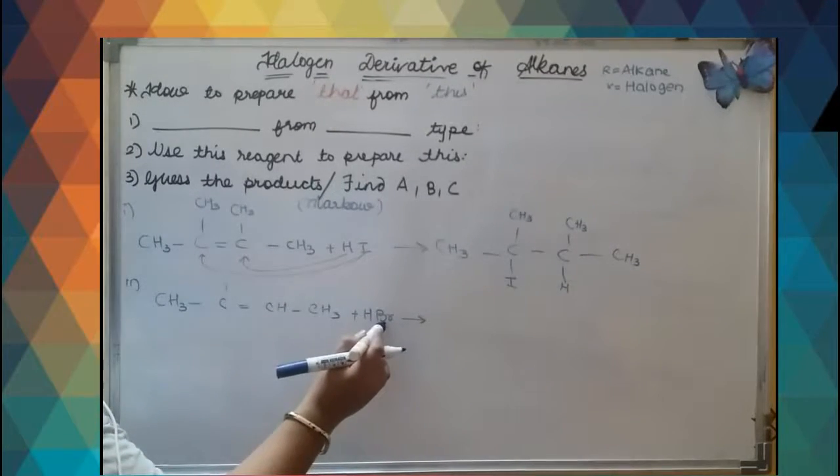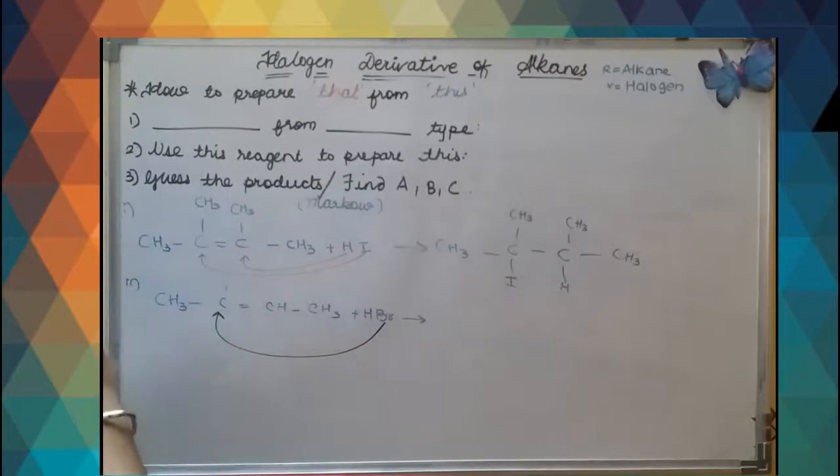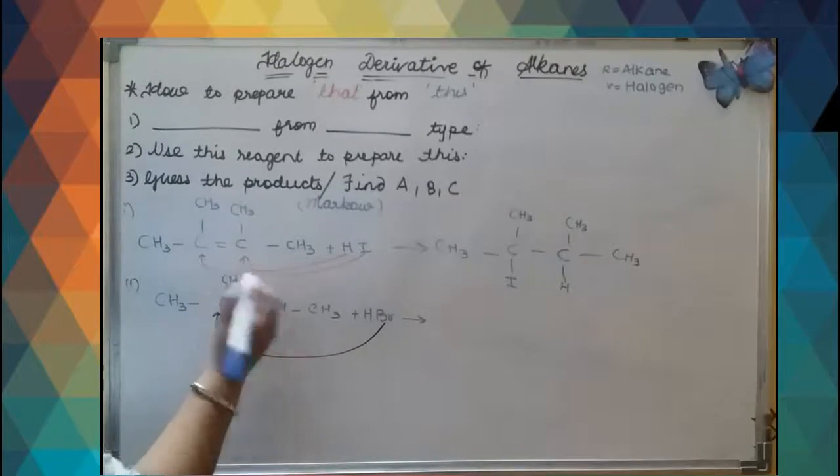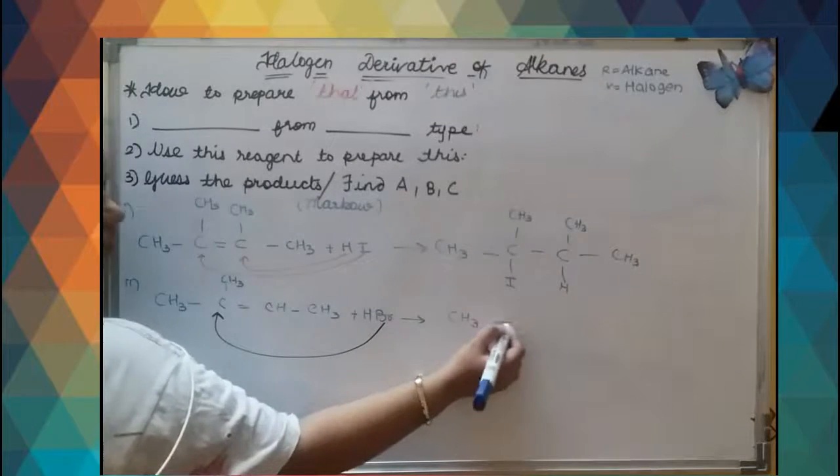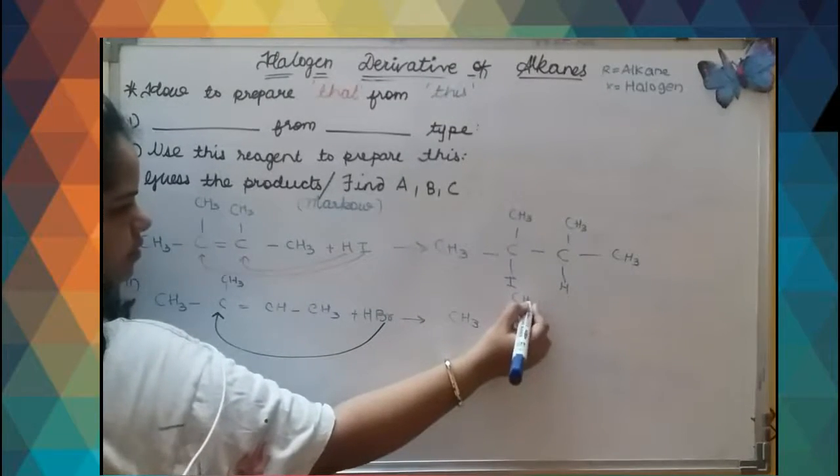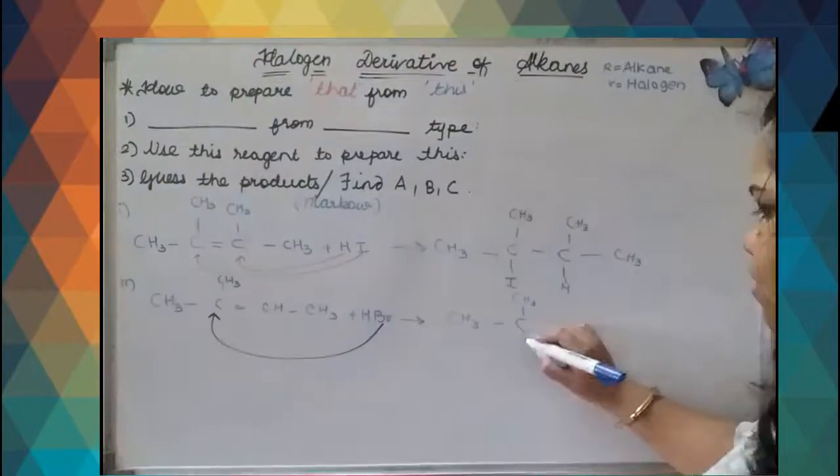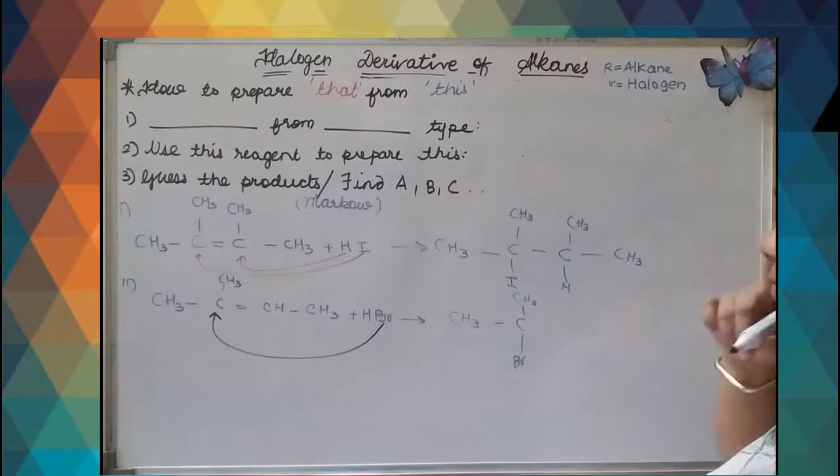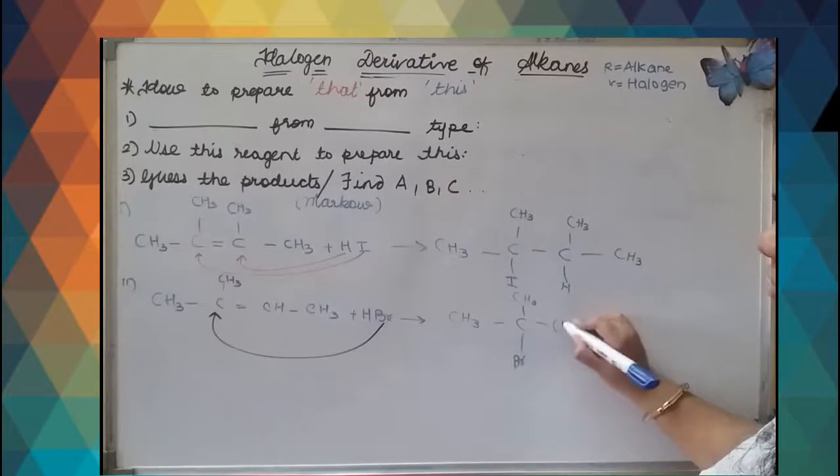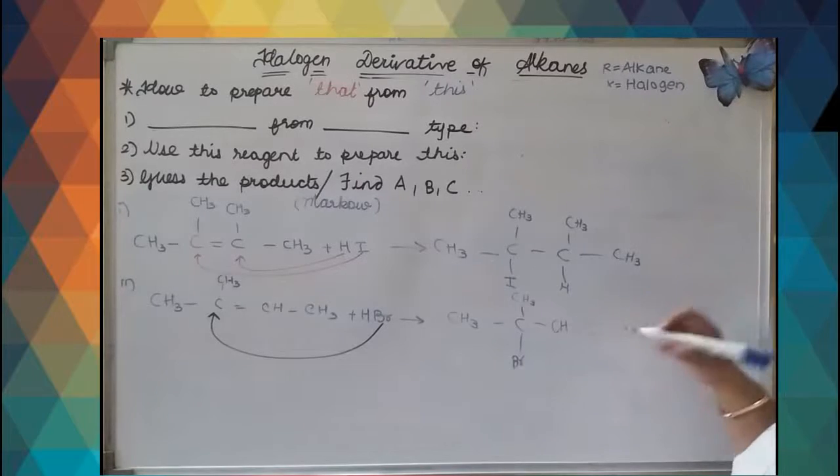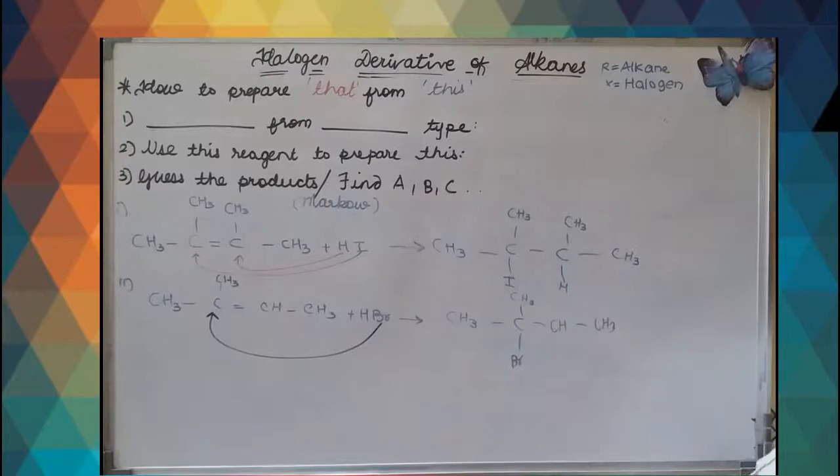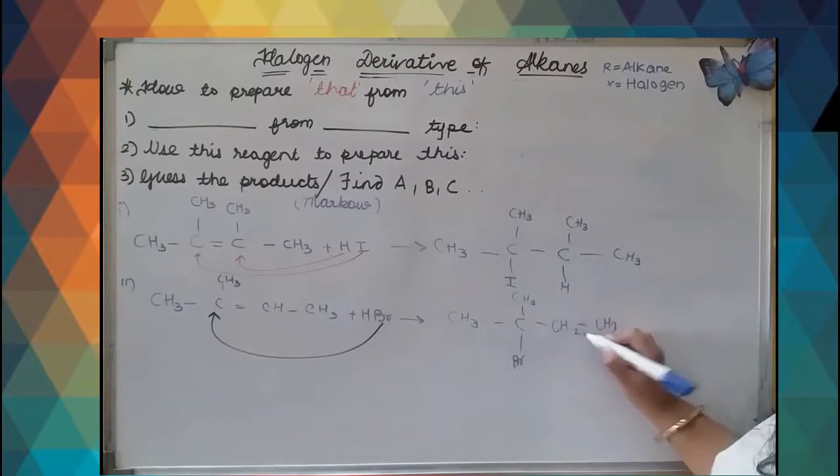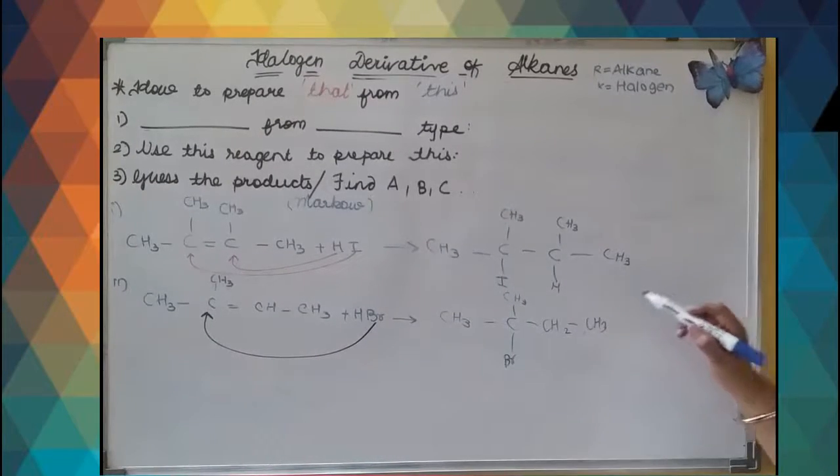Here Br will get attached to this carbon atom. Sorry, this was CH3. So what we will get: CH3-C-CH3-Br. CH double bond breaks up and CH3. Since it has to balance, this would be CH2. Let us name these compounds.